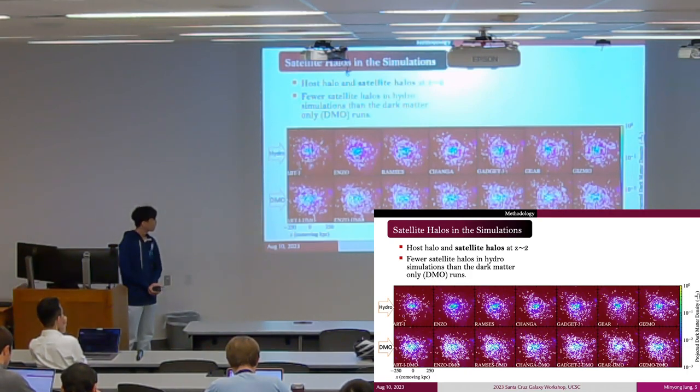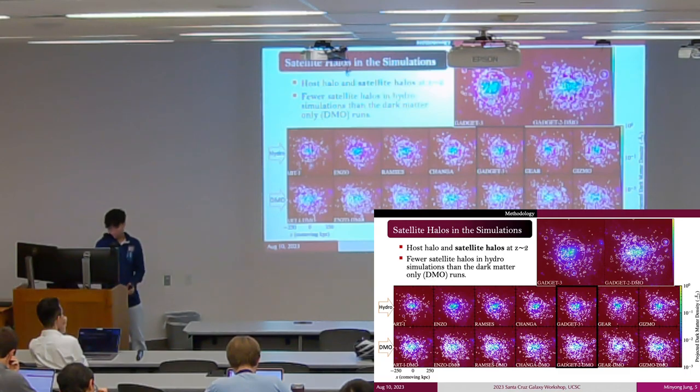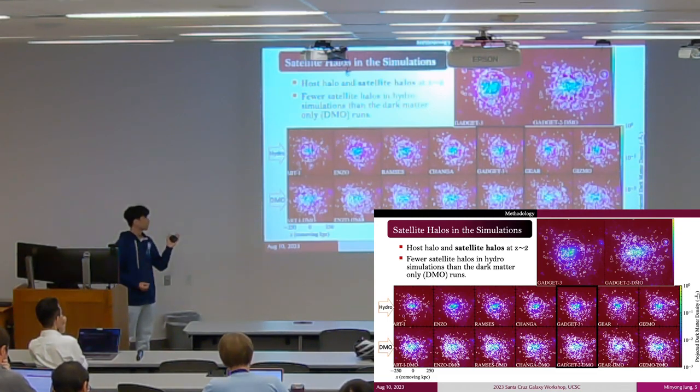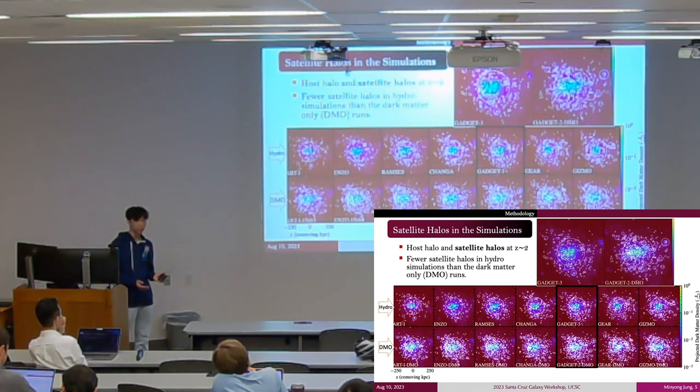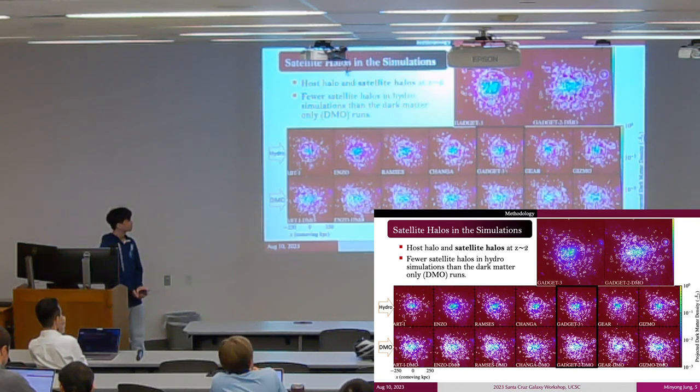We also noticed that the number of satellite halos is quite different between hydrodynamic simulations and dark matter only simulations. Apparently, baryonic physics affects the abundance of satellite halos. Before comparing the galaxies with observational counterparts, we first investigate the intercode agreement in satellite halos.